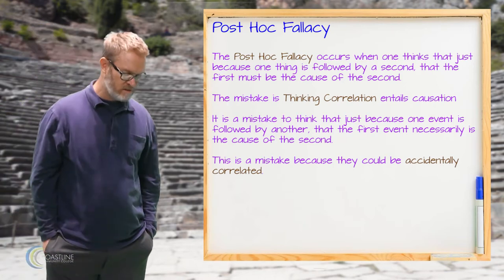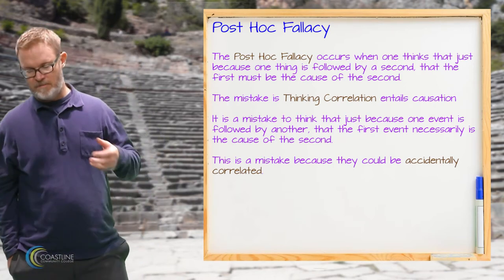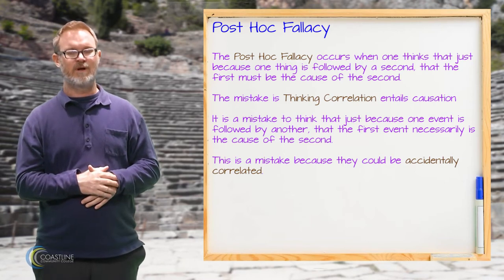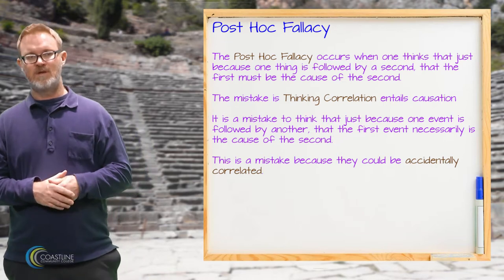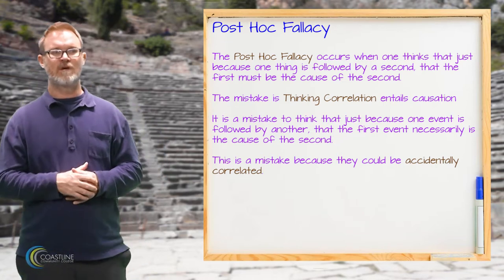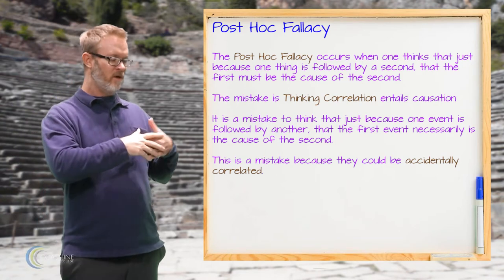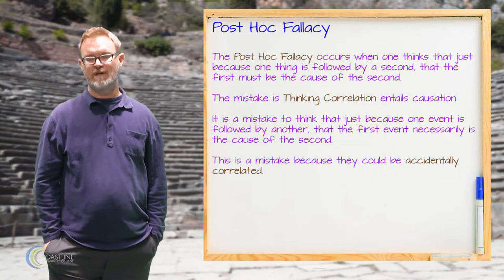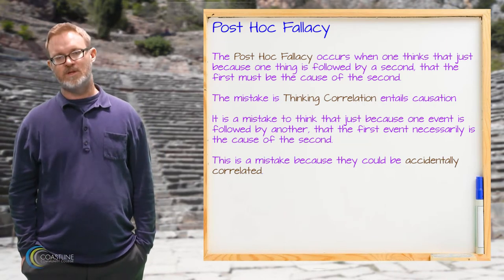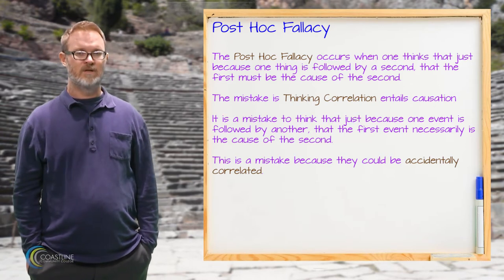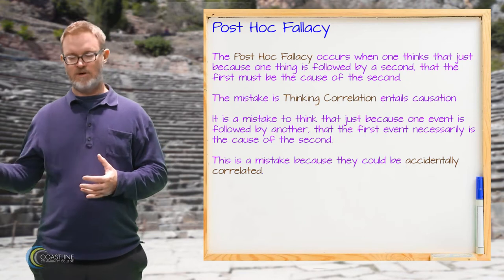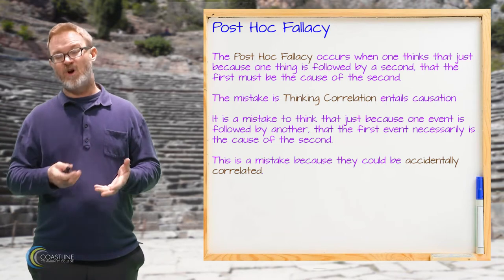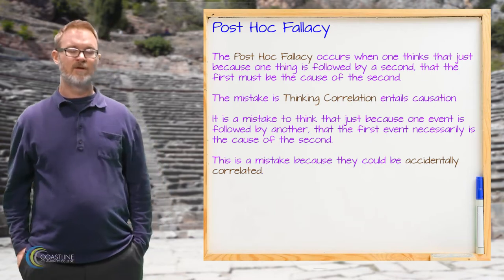This leads us to the next point: when we reason that just because two things are correlated means one must cause the other, this is a kind of mistake in causal reasoning. This is what we call the post-hoc fallacy — thinking that just because you have correlation, you must have causation. We must be open-minded enough in causal reasoning to accept the possibility that you could just have accidental correlation without causation, such as in the three pennies example.